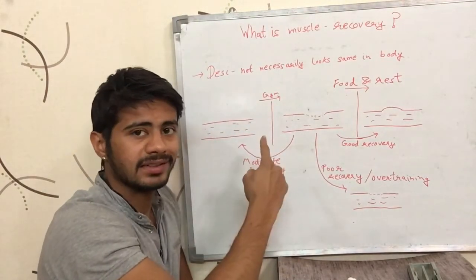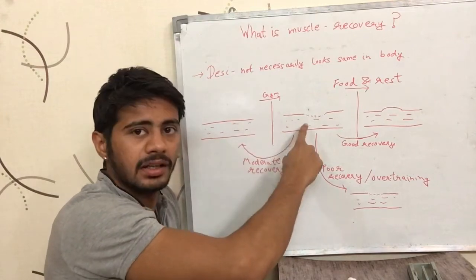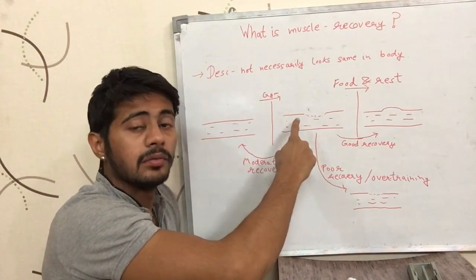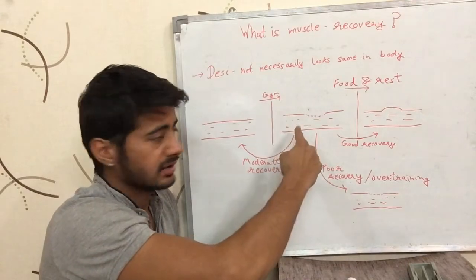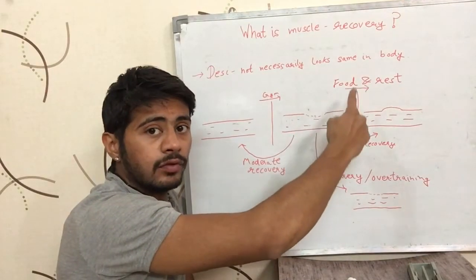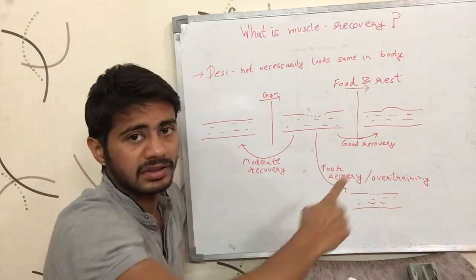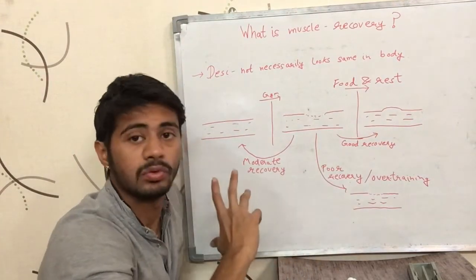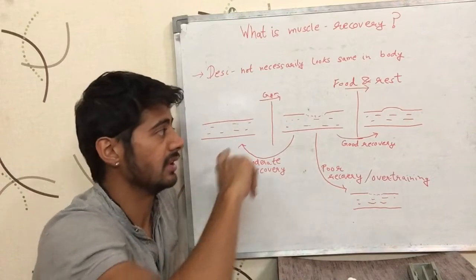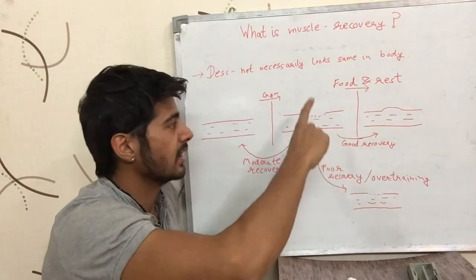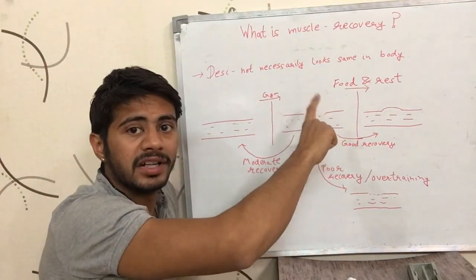So that is why we exercise. We break the muscle, we actually break the muscle, we get weaker for some time right after the exercise. But by giving it the right food and rest, we get a stronger muscle, a bigger muscle. That is why we exercise. So we should be exercising because we get stronger. It is our body's tendency to recover.